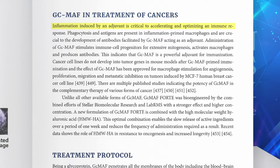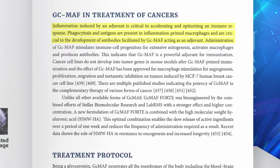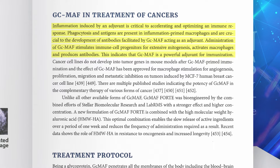Inflammation reduced by an adjuvant is critical to accelerating and optimizing an immune response. Phagocytosis and antigen presentation in inflammation-primed macrophages are crucial to the development of antibodies, facilitated by GCMAF acting as an adjuvant. Administration of GCMAF stimulates immune cell progenitors for extensive mitogenesis, activates macrophages, and produces antibodies, indicating that GCMAF is a powerful adjuvant for immunization.